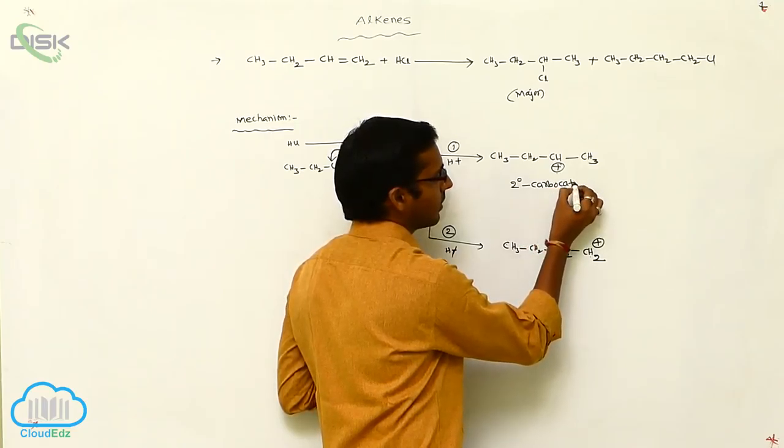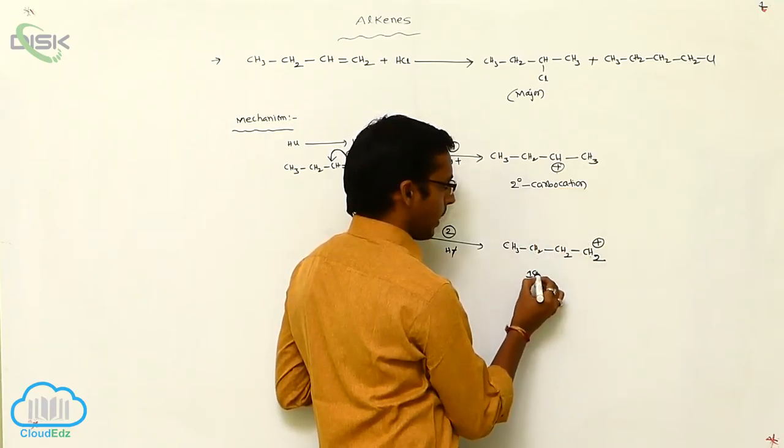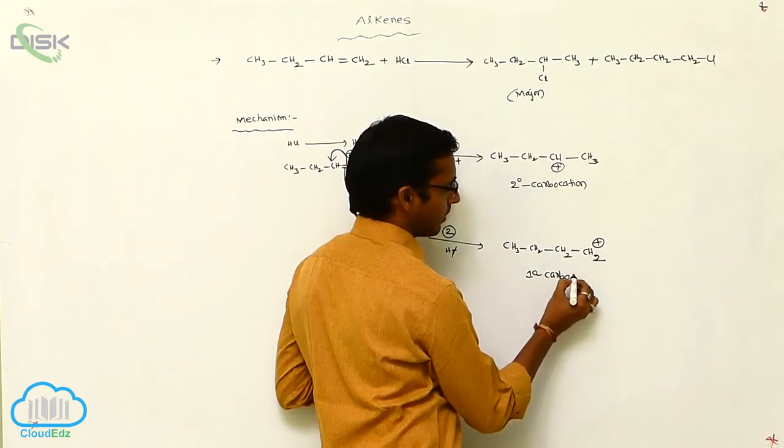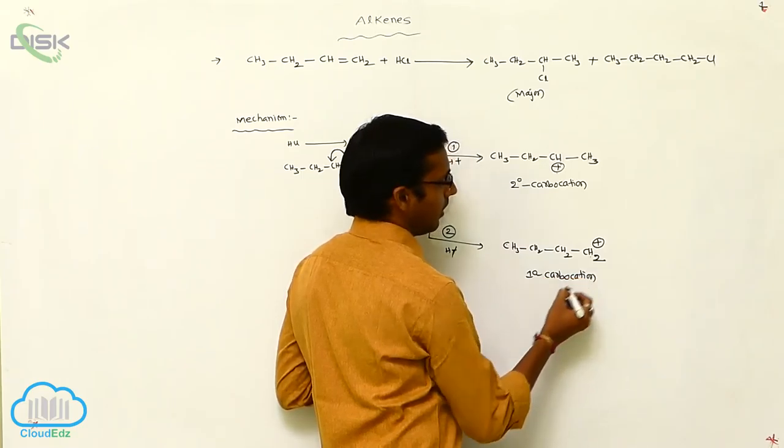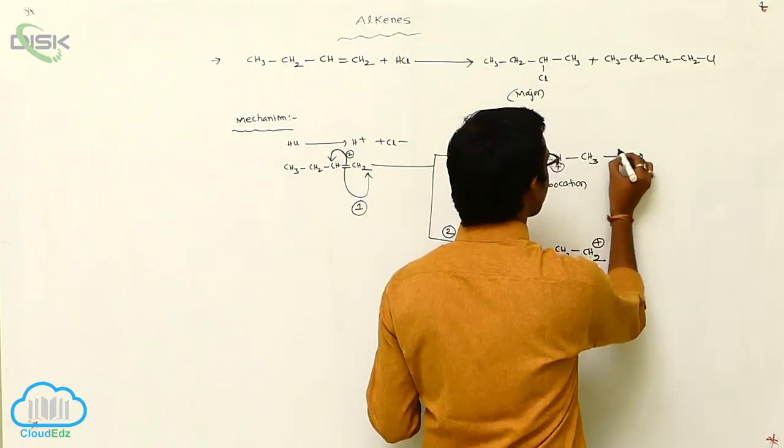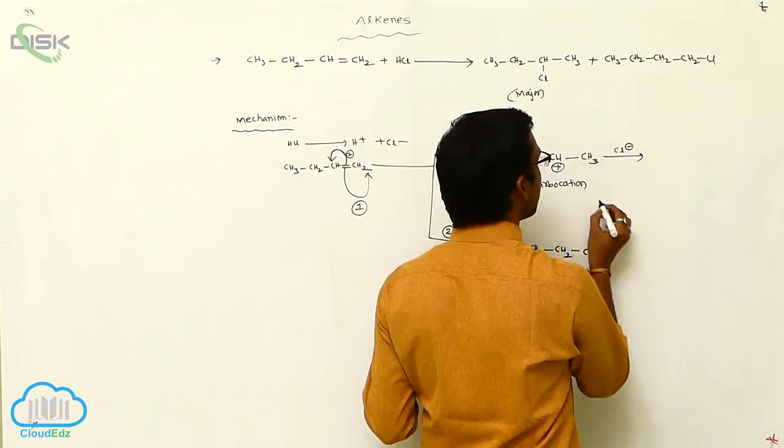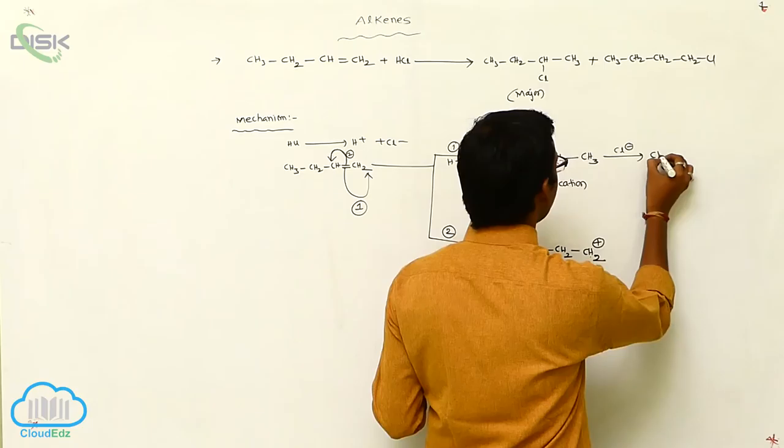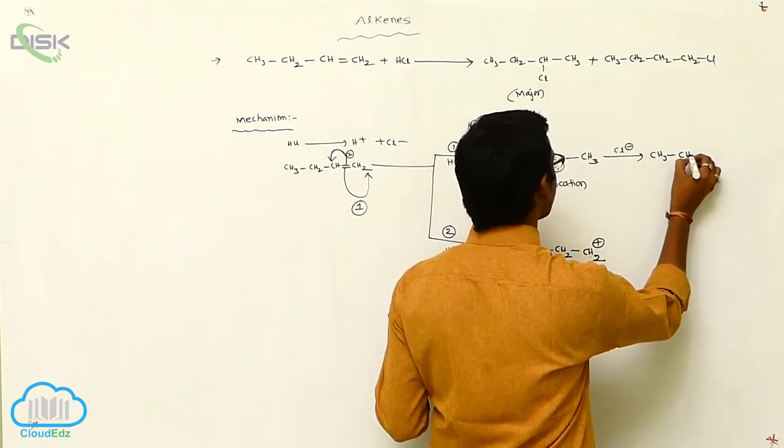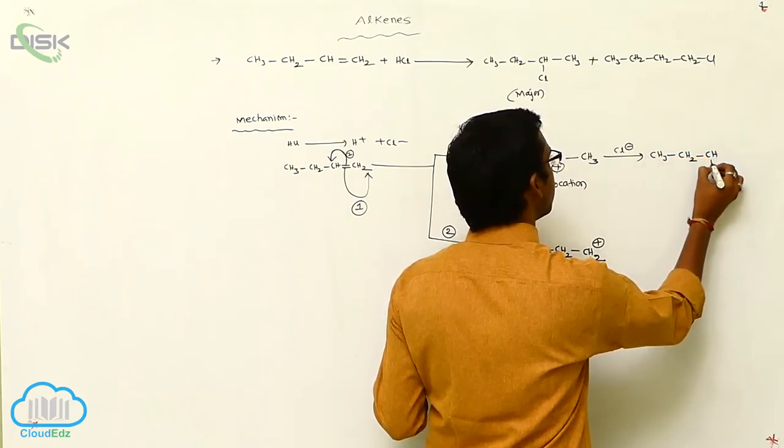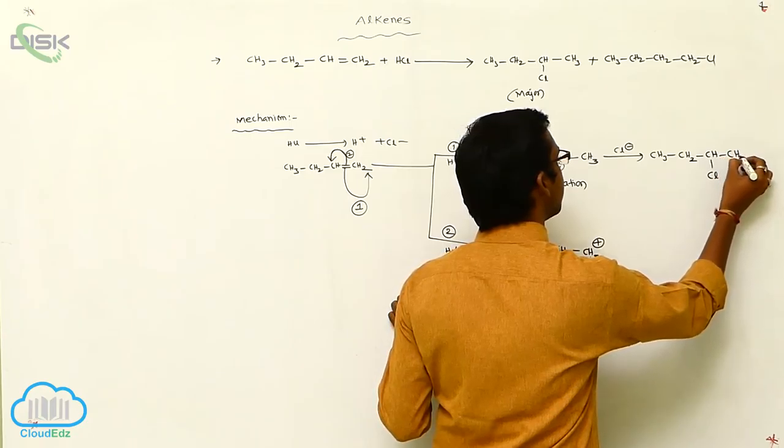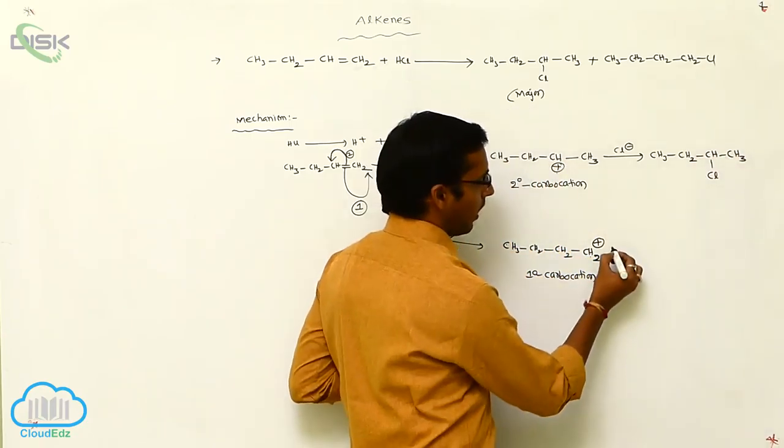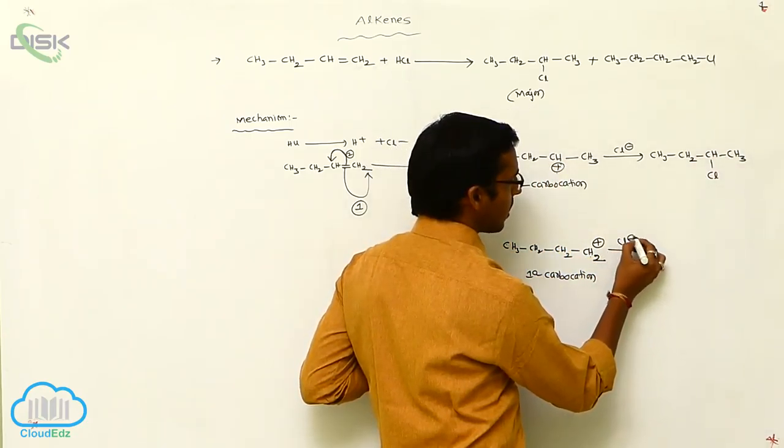What is the name now? CH₃-CH₂-CH₂⁺. Here, positive charge, CH₂⁺. See here, this is your carbocation, this is also carbocation. But which carbocation? Secondary carbocation. This is primary carbocation.